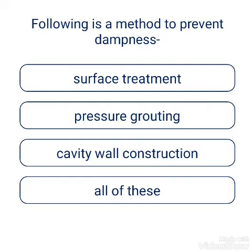Question: Which of the following is a method to prevent dampness? Options: surface treatment, pressure grouting, cavity wall construction, all of this. The answer is all of this.